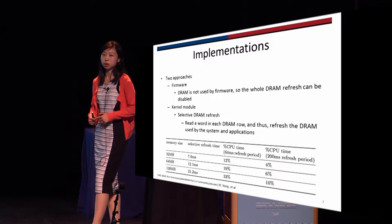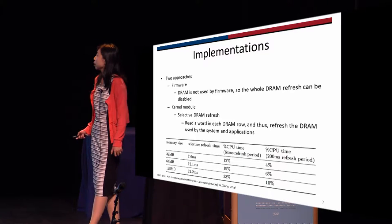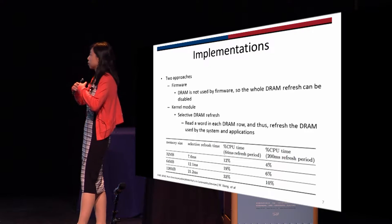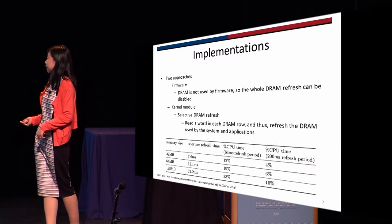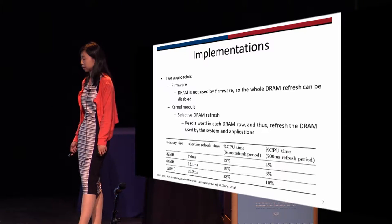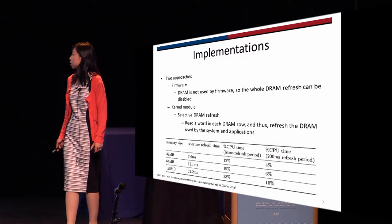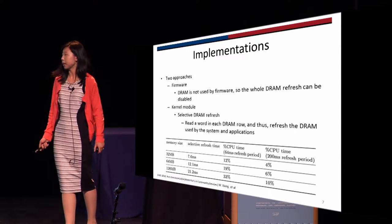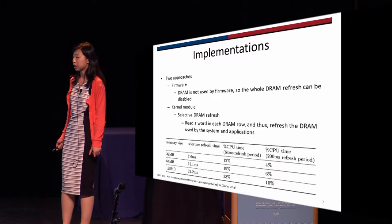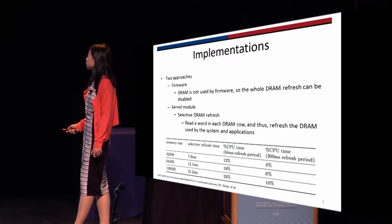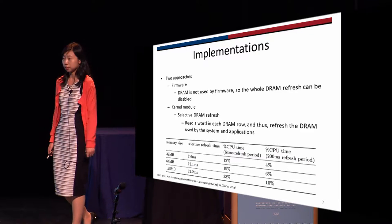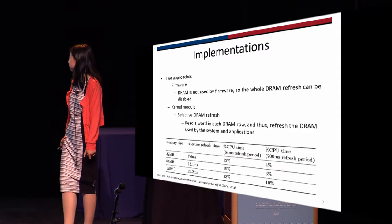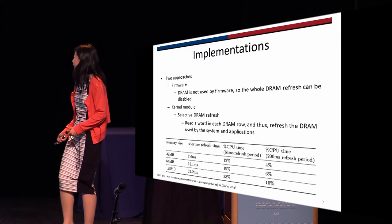But for Intel Galileo, we can only disable refresh for the whole DRAM. So we use successive selective DRAM refresh, which means we successively read each row and protect the data used by the system and other applications. This introduces some overhead but not much. If we use half of the memory in Galileo for the system, it will take around 20 milliseconds to refresh that part of memory, which is around one-third of the CPU time using a 64-millisecond refresh period. We also find that at room temperature it's safe to use longer refresh rates.